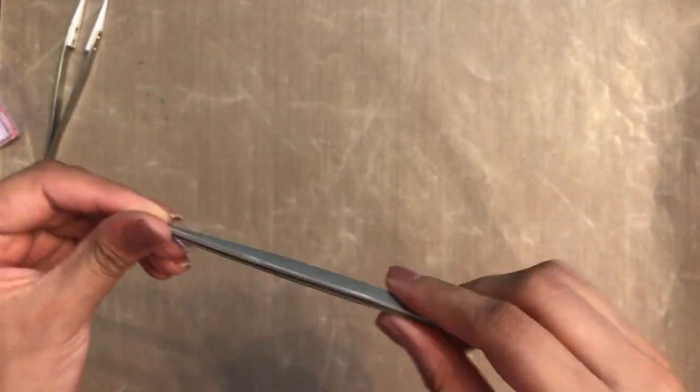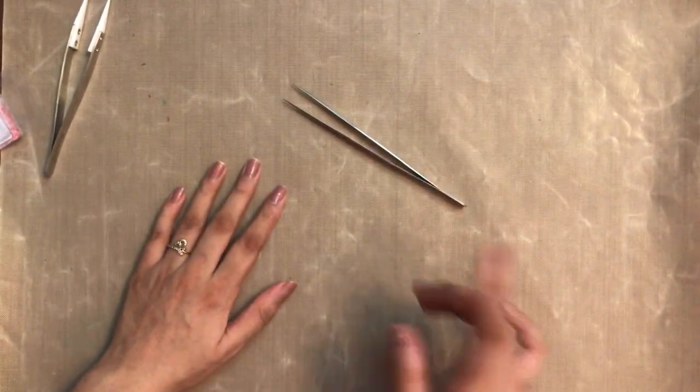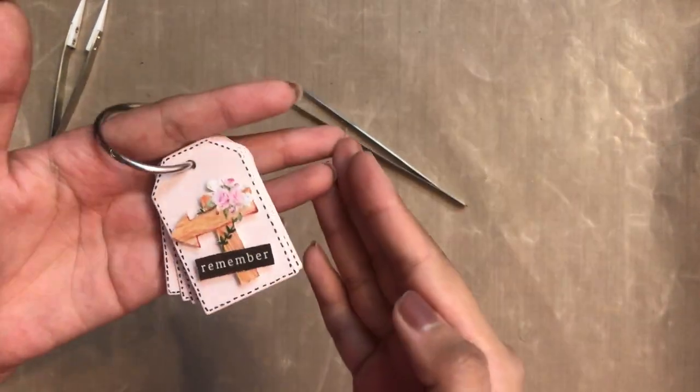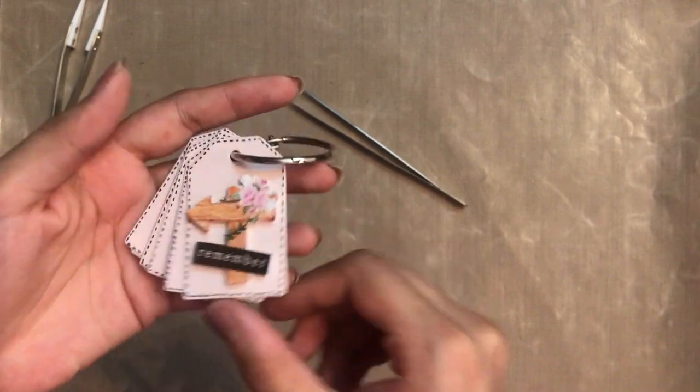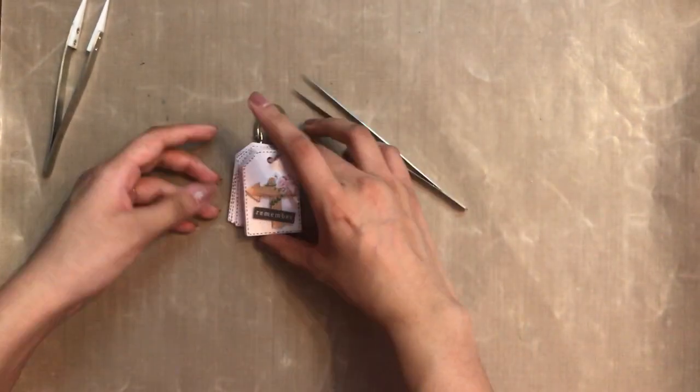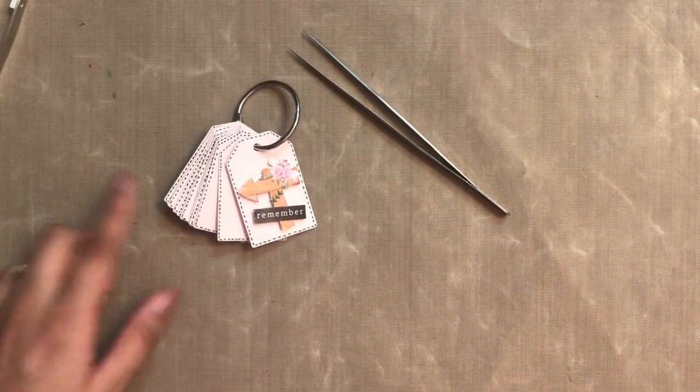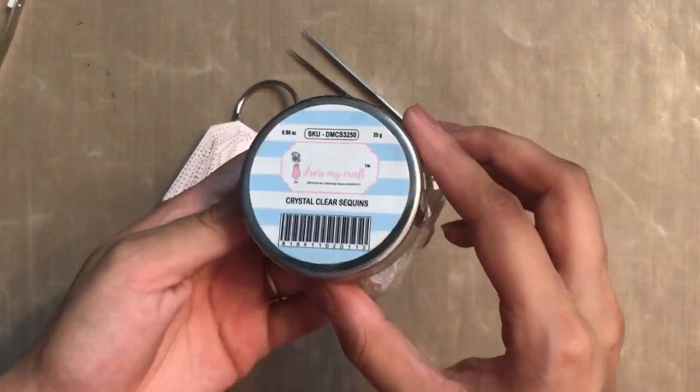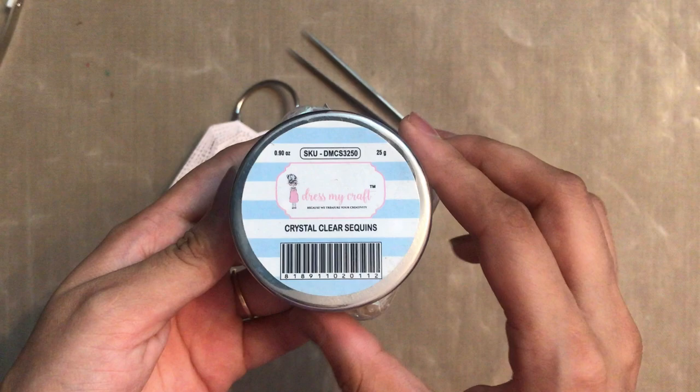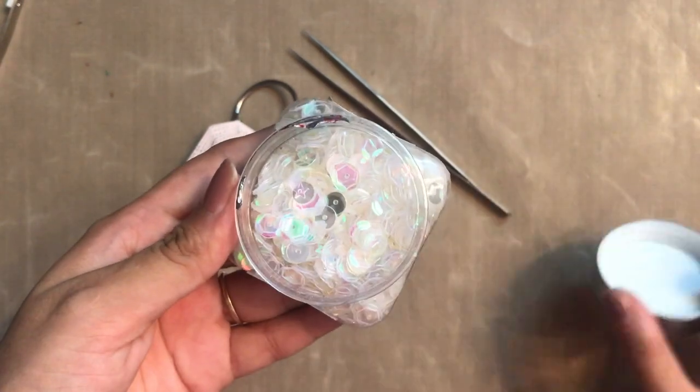Here you can see the branding of Dress My Craft, and these tweezers have got a very nice matte finish look. In previous videos I shared the tutorial on how you can create this mini tag book, and now today we're going to embellish it with the help of sequins.